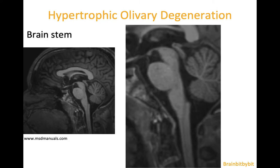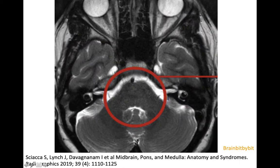If you look at the brainstem on sagittal T1-weighted images, you can divide it into midbrain, pons with its pregnant belly appearance, and medulla based on the morphology. On transverse images you can also recognize the three parts of the brainstem, and to know where you are, you can check for connection with the cerebellum — if there is a connection, you're at the level of the pons.